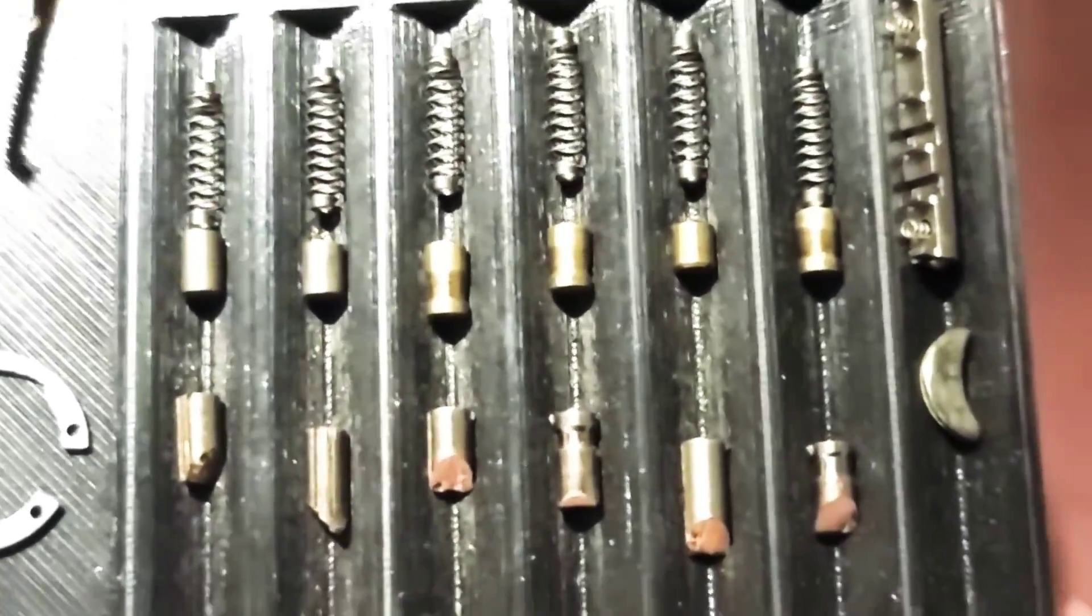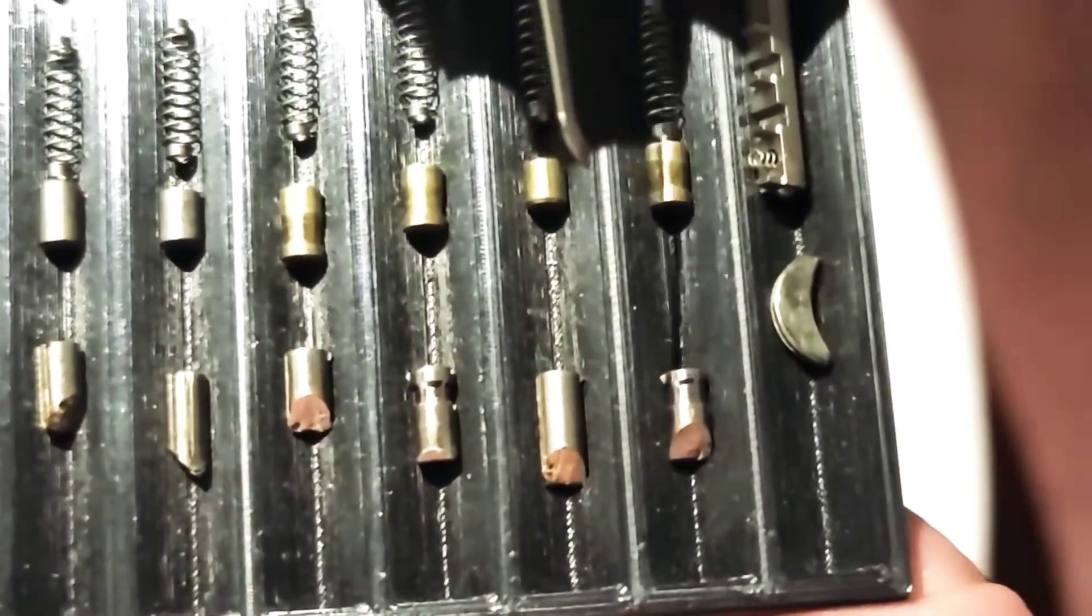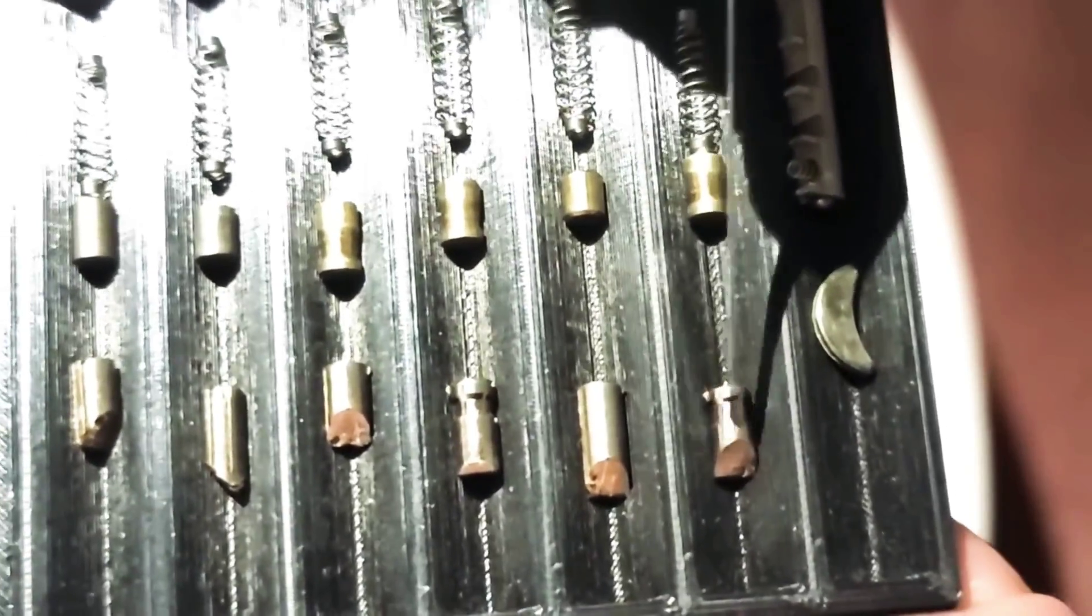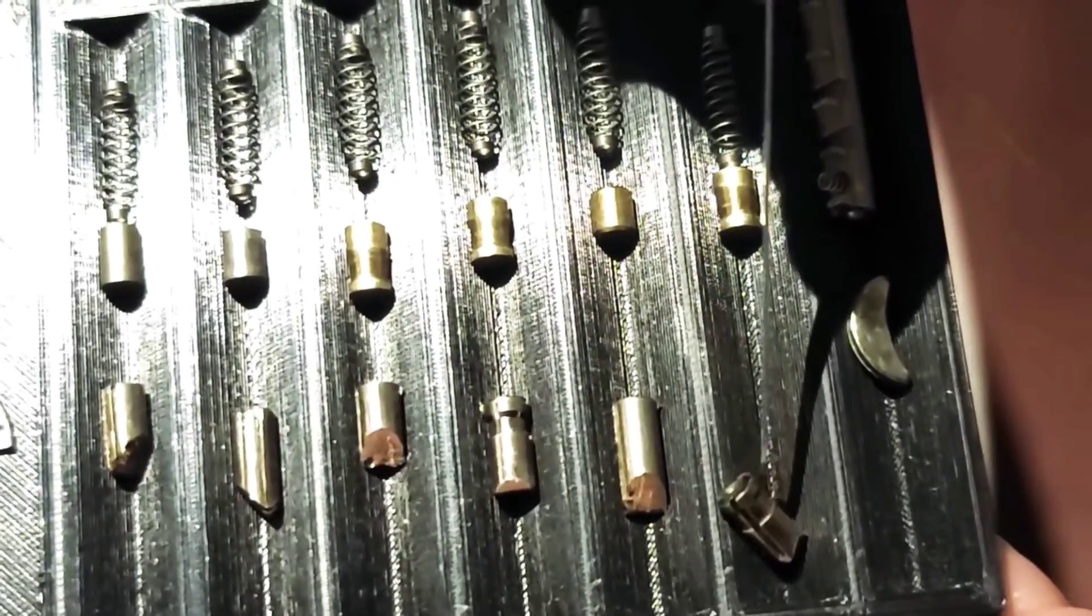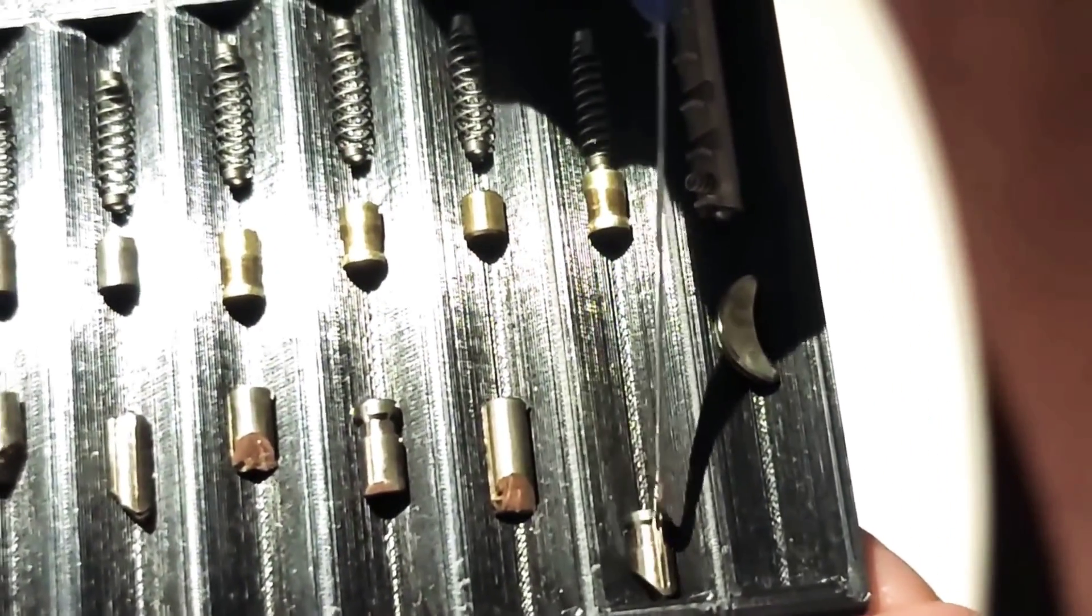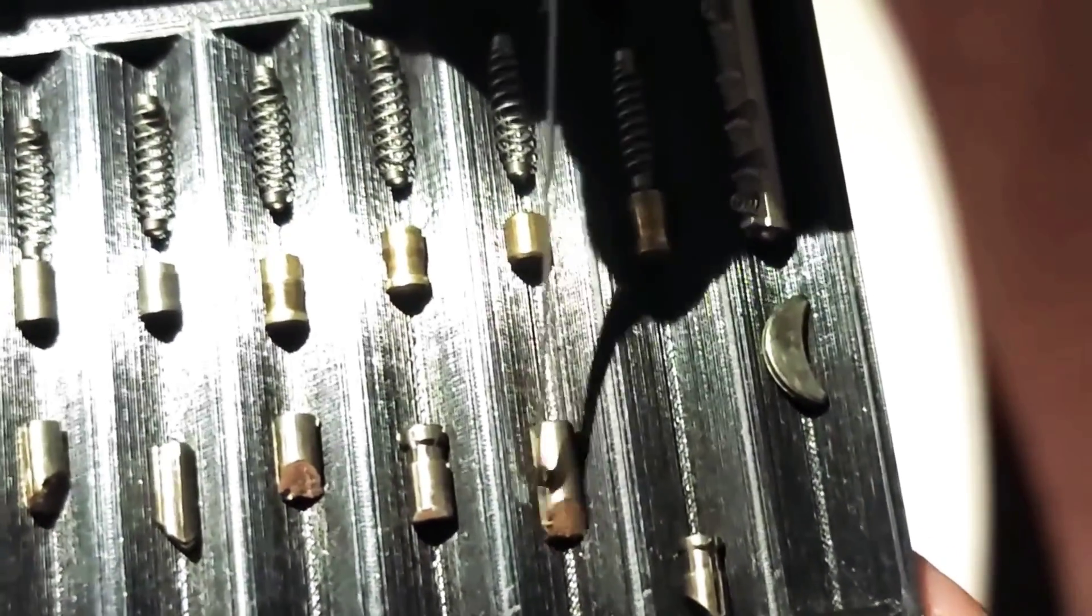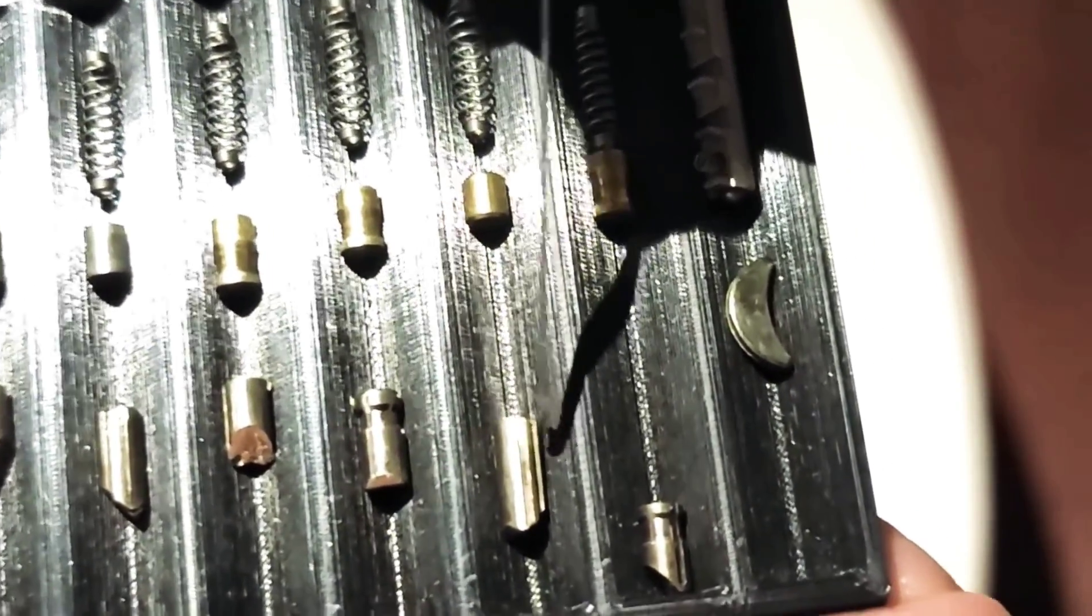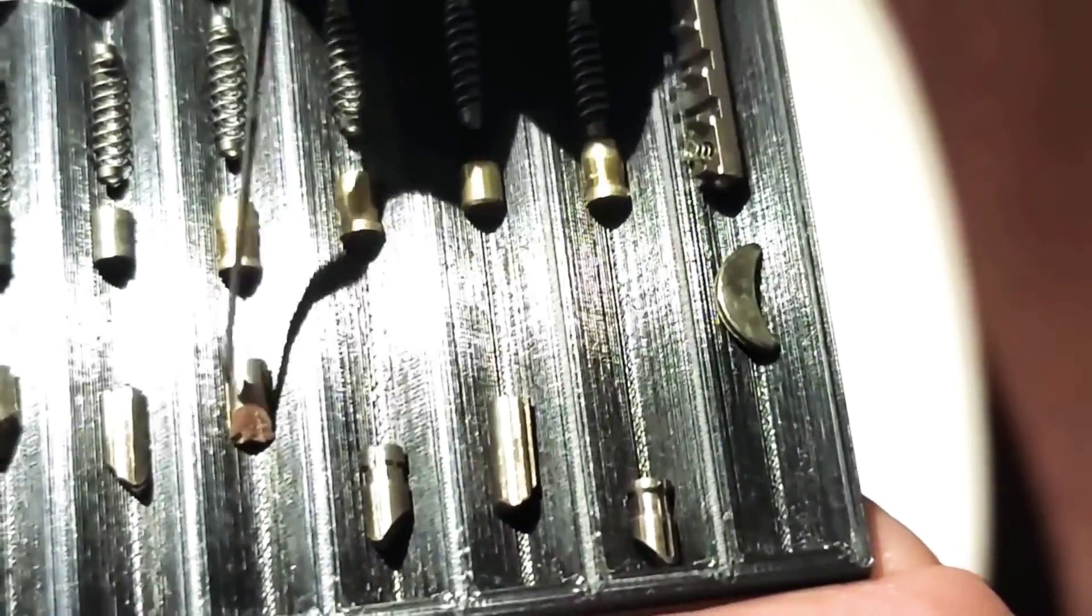All right, here are our key pins. Number 4 and number 6 are the spooled key pins. And if you look carefully on these key pins, you will see that they do have the false gates in them. It's just really hard to see because they're very faint. Here's one right there.